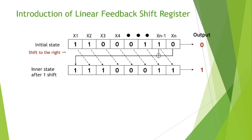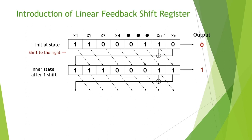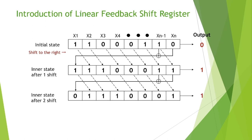If we shift another time, the output will be the last digit, which is one. We shift again — all digits are shifted to the right, the last two digits go through XOR computation, and we have our new states after two shifts. The inner states of our LFSR became: 0, 1, 1, 1, 0, 0, 0, 1, and the output result is one.